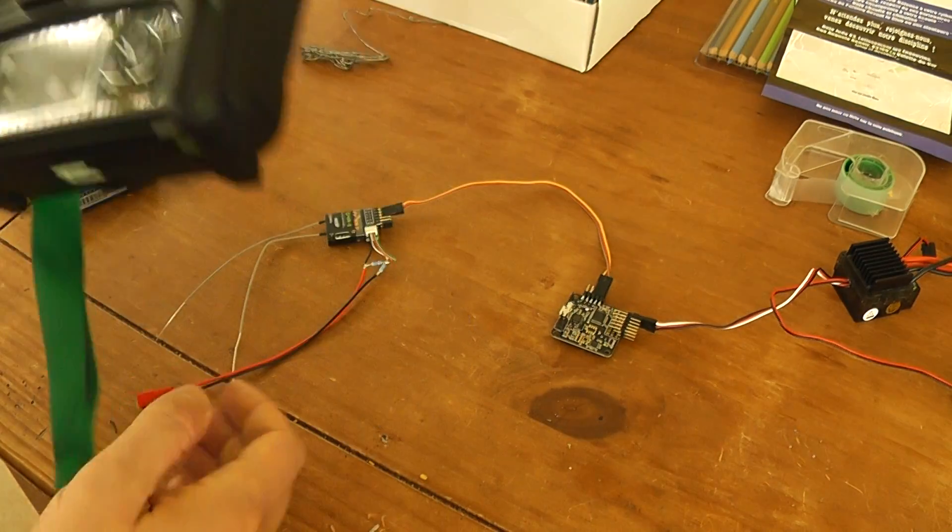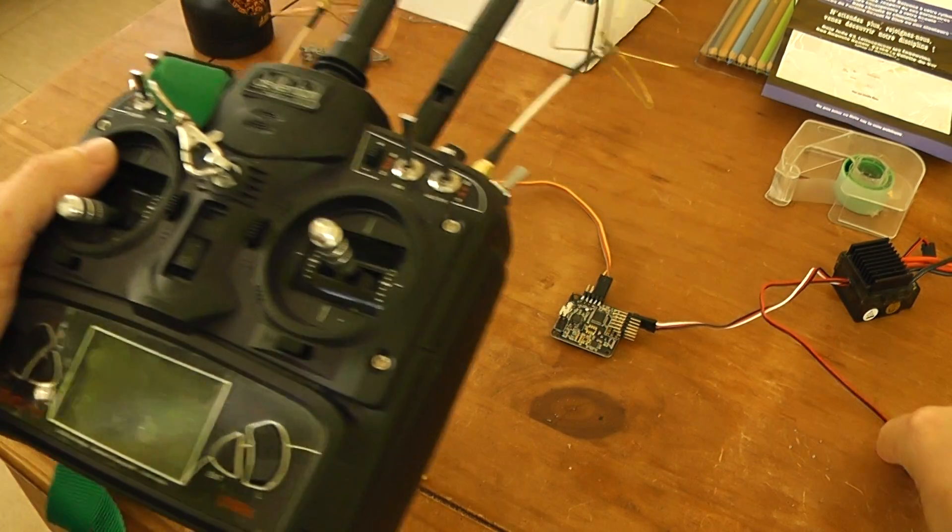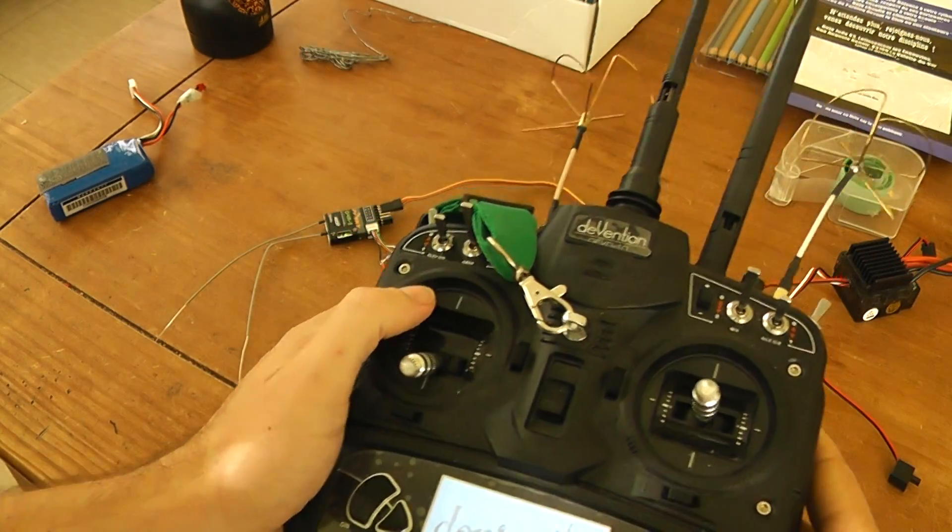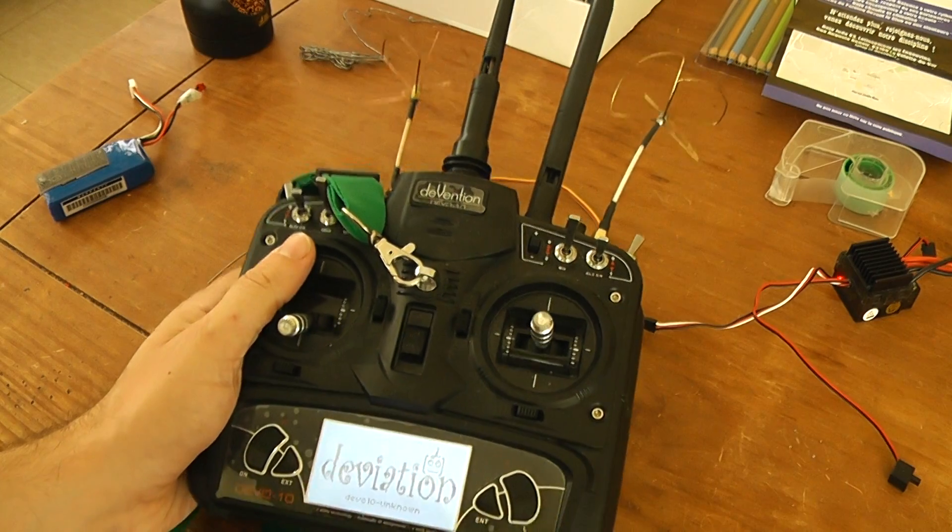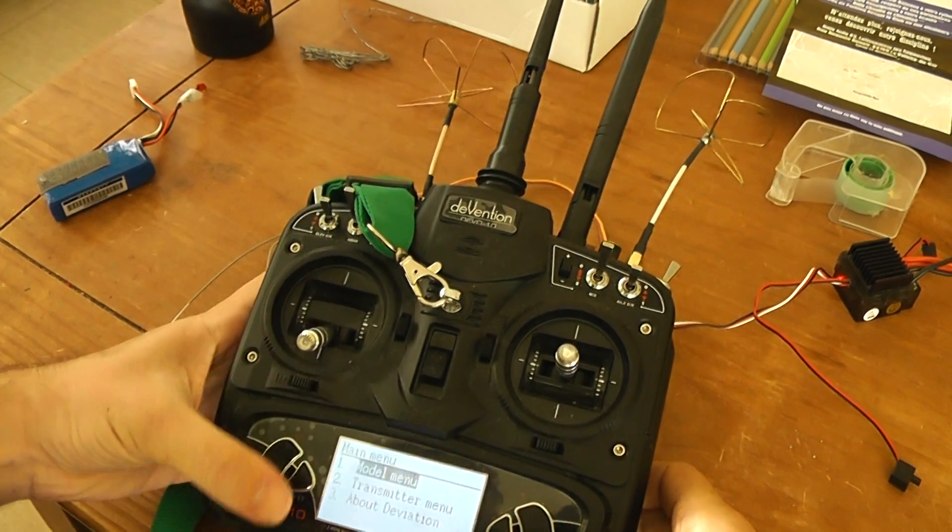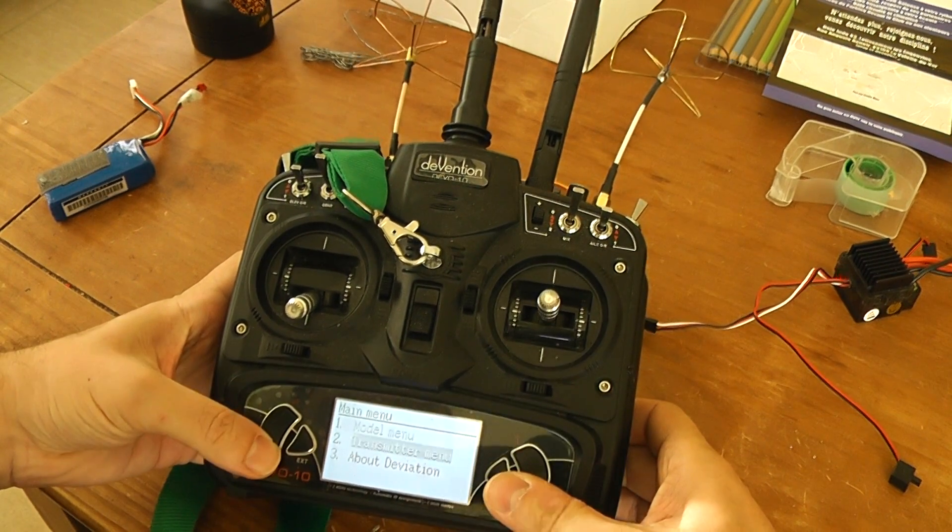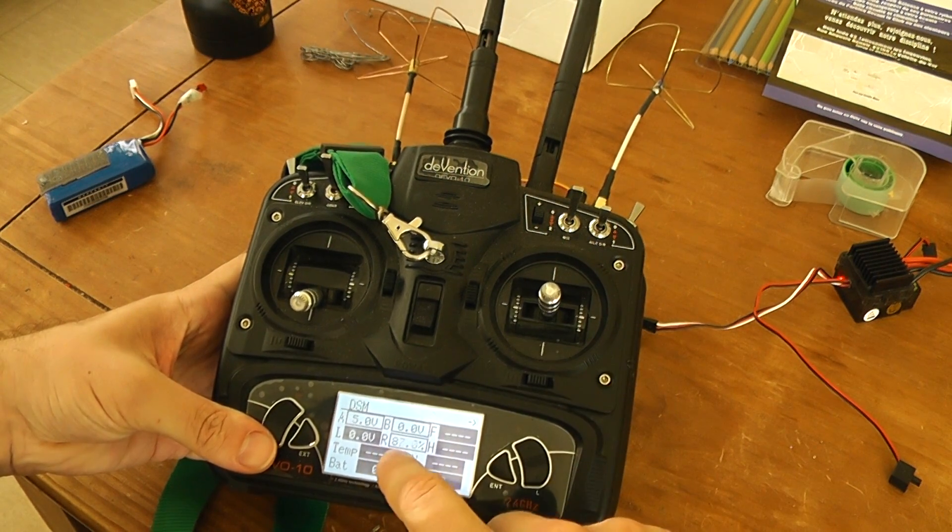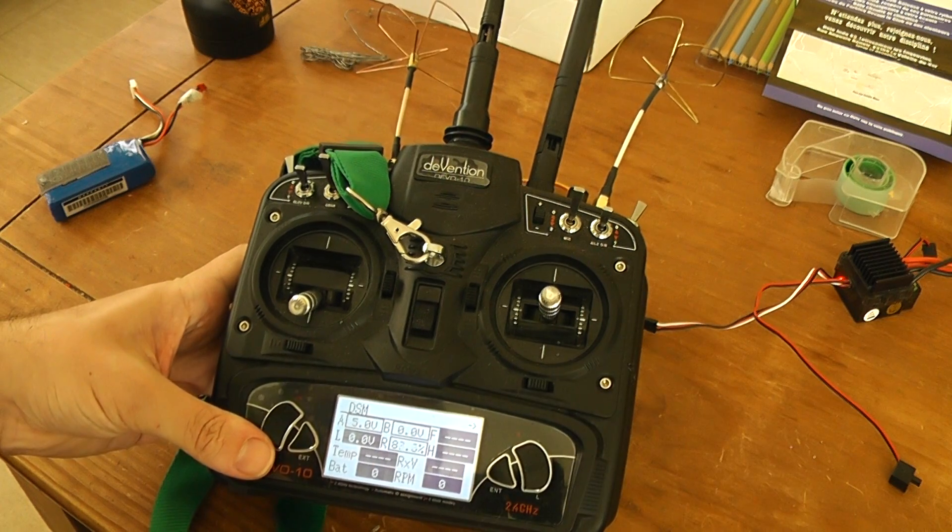In order to give you an idea, I will turn on the transmitter and turn off the Deviation transmitter. As you will see, if I go to the monitor, you will see that I am now displaying the RSSI in percentage.